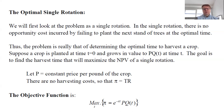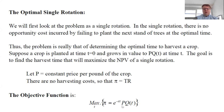We also need to take into account discounting. Time is T and R is the discount rate, which we can think of as an interest rate. There is an opportunity cost for the forest owner, because the timber could always be harvested and the profits invested in a bank account. This gives us the objective function: we maximize pi, which is the discount factor times price times quantity.